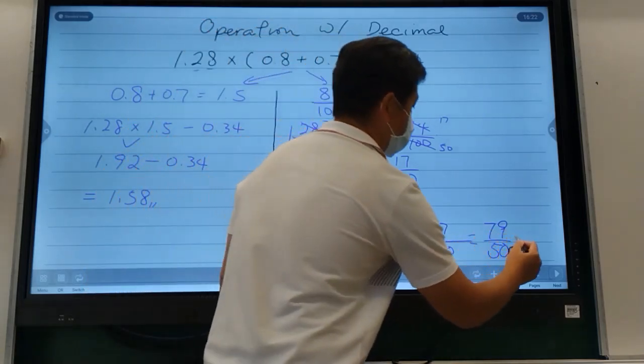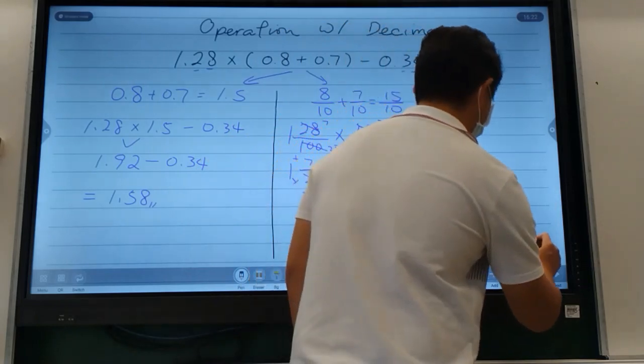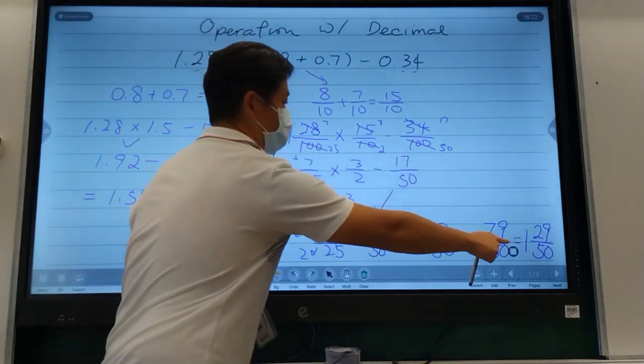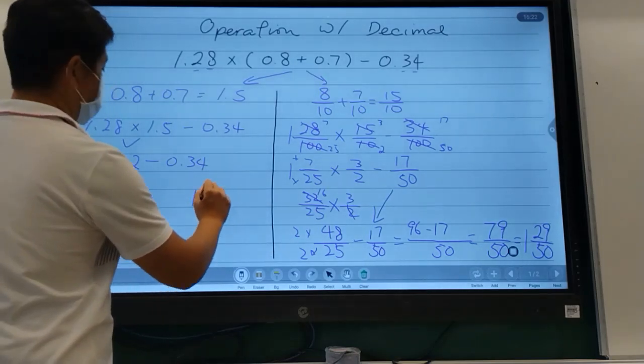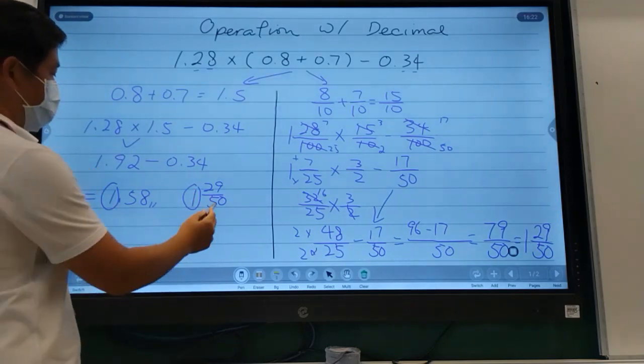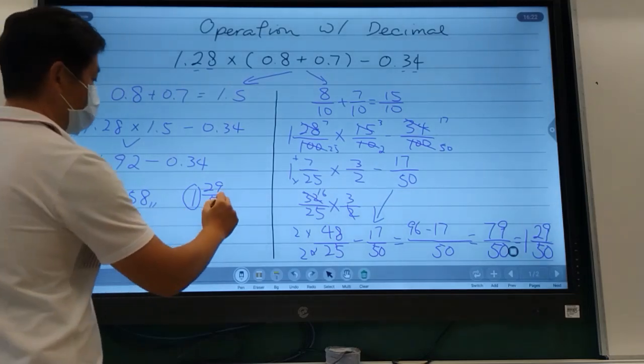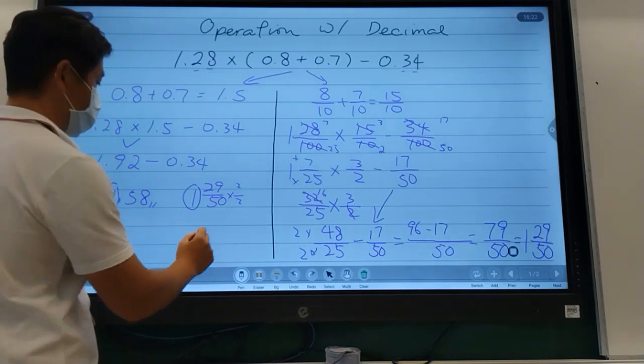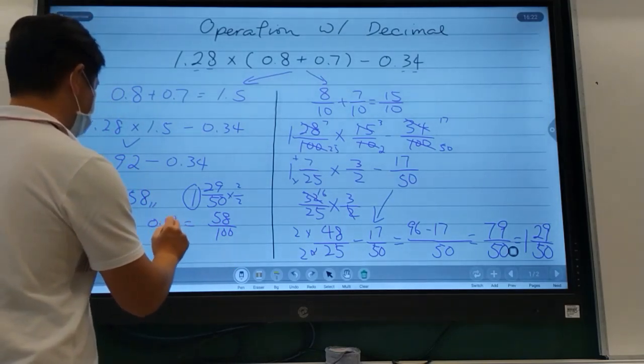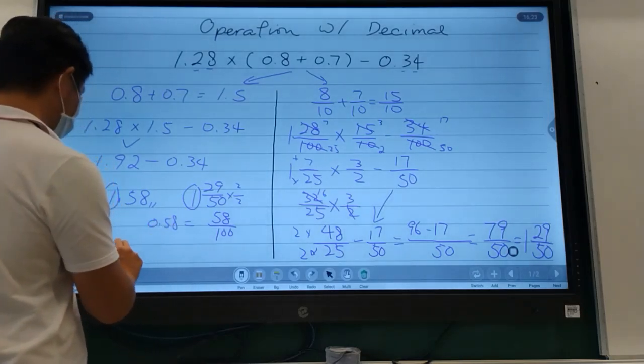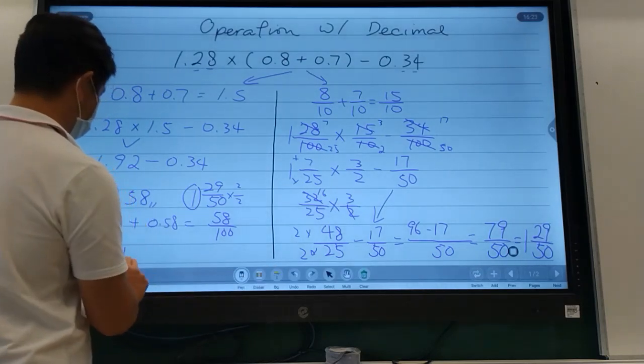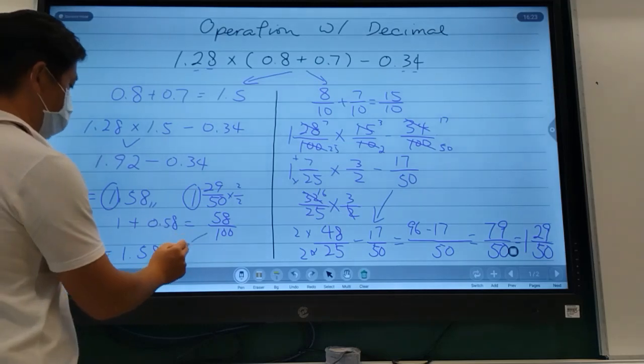79 over 50, or if you want to change it to a mixed number, it would be 1 and 29 over 50. Now if I times 2 on both top and bottom, I should get 58 over 100, which equals 0.58. Add the 1, so your final answer, they both equal 1.58.